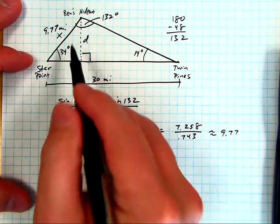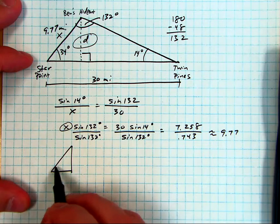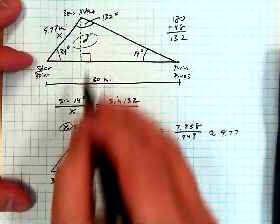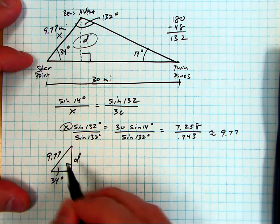Okay, that helps us. Now we're going to be able to find D. I'll just set up a smaller right triangle right here. So this right here is 34 degrees, we're looking for D, the distance right there. And we know this side is 9.77 miles.